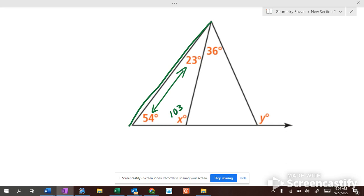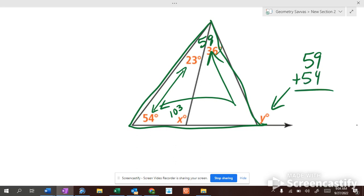To figure out what y is, it's part of this green triangle here. These two up here add up to 59. This one's 54. An exterior angle equals the sum of the two remote interior angles. The two interior angles that do not touch it. What's 59 plus 54 equal? 113.